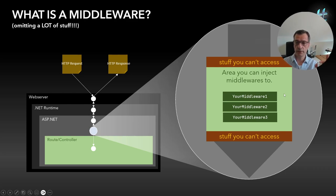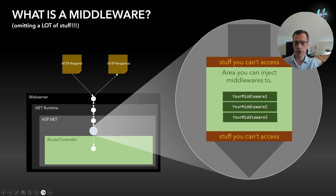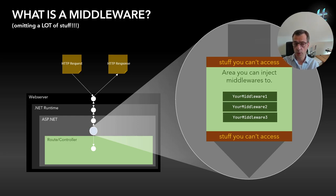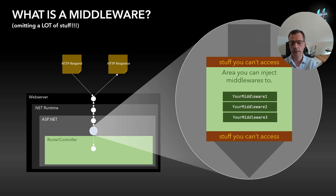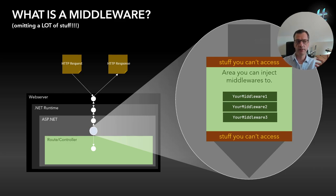There are middlewares you probably know, like the authorization middleware of ASP.NET. If you go to your startup configuration and say you want authorization in place, all you do is inject the already-programmed middleware into this pipeline — saying that if the request is not authorized and the controller requires authorization, ensure it doesn't hit the route if the condition is not met. That's basically the idea of what we call middleware.